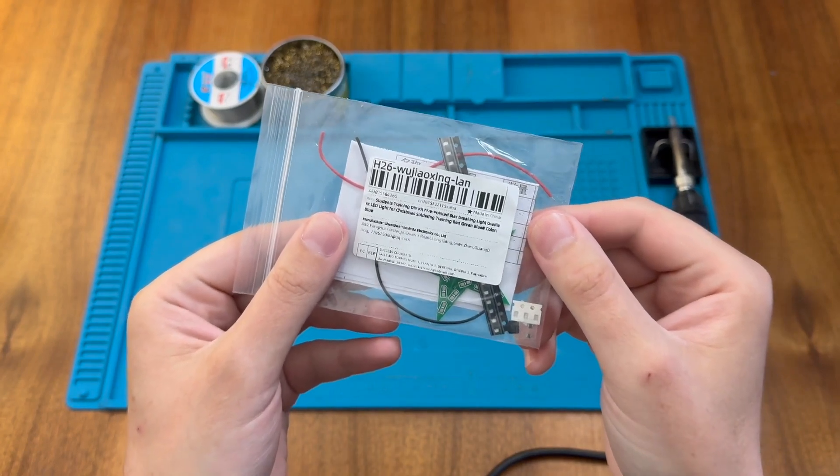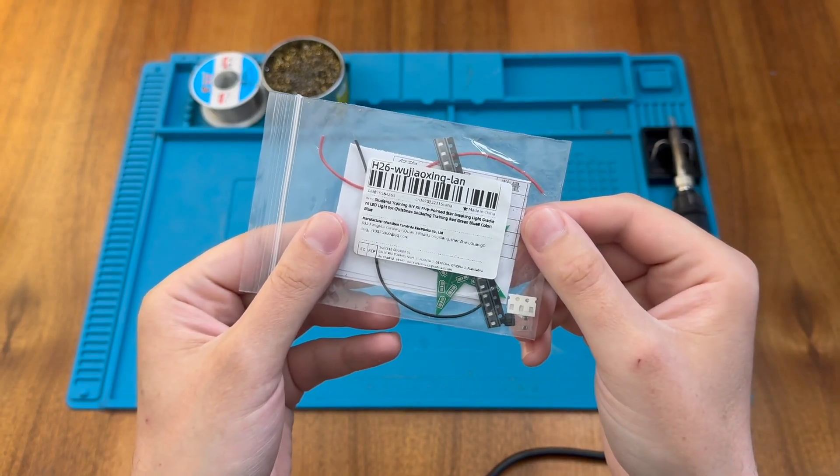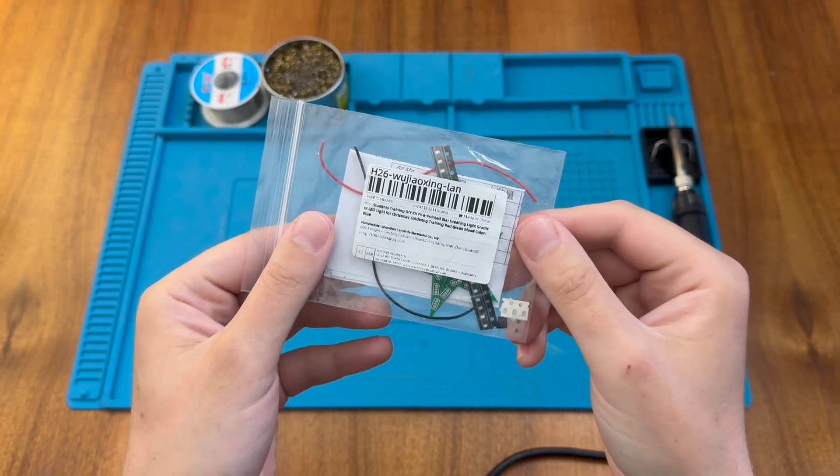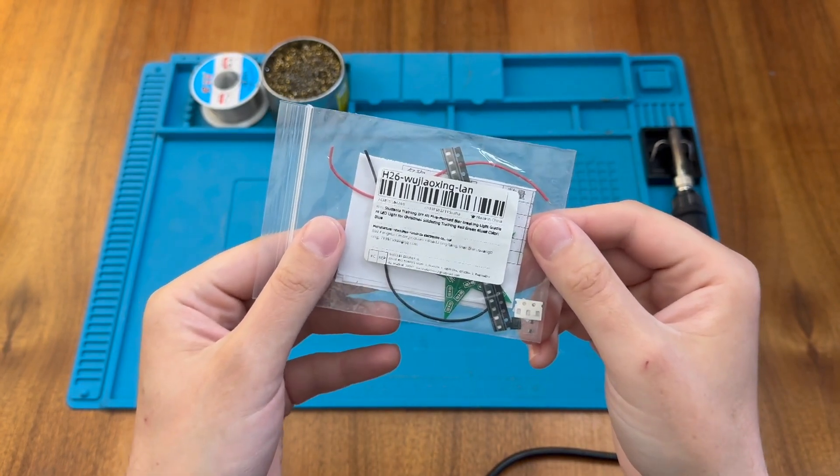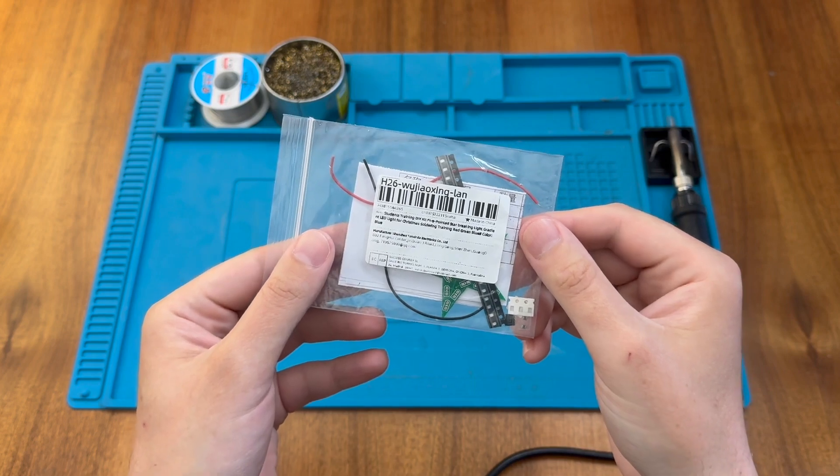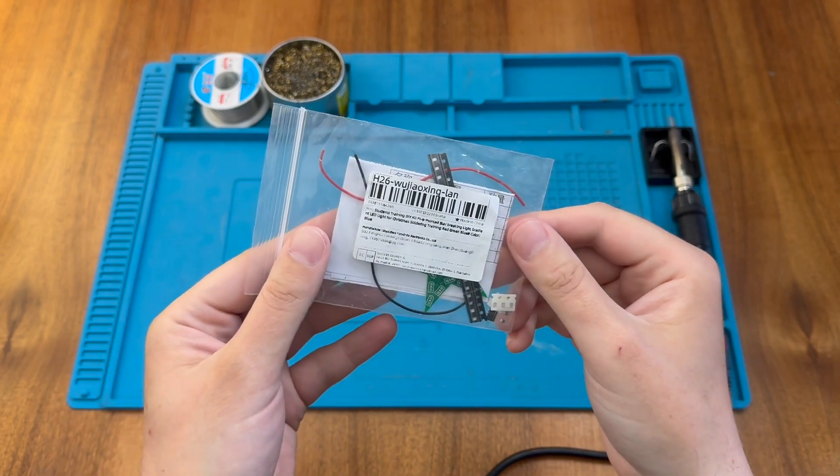This is a DIY 5-point star soldering kit. It's another one of my AliExpress purchases, but I thought it would be a fun little surface mount soldering kit to practice on today. So let's take a look inside and see what we get.